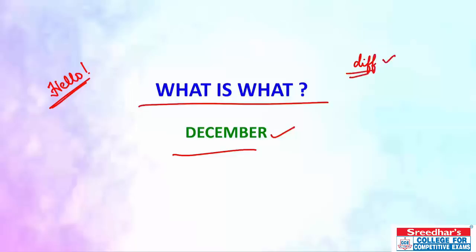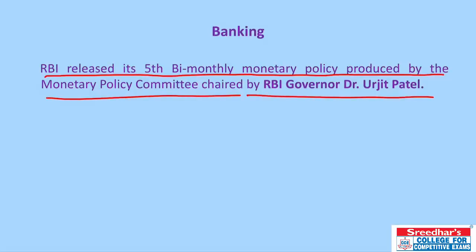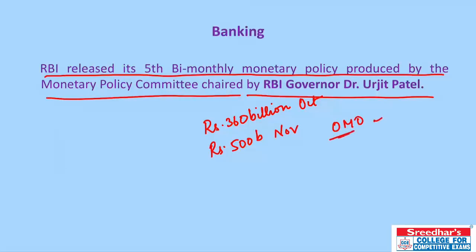Reserve Bank of India has released its fifth bi-monthly monetary policy, produced by the Monetary Policy Committee chaired by RBI Governor Dr. Urjit Patel. The RBI has injected durable liquidity amounting to ₹360 billion in October and ₹500 billion in November through open market operations. Total durable liquidity injection so far is ₹1.36 trillion for 2018-19.